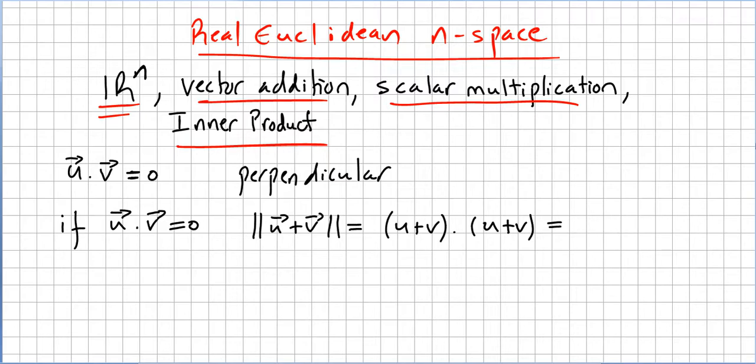So, u times u is u times u, u times v is 0, v times u is 0, and v times v. So this is the norm of u plus v squared, which equals u squared plus v squared.